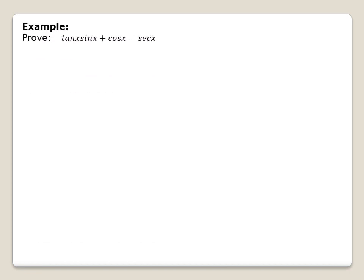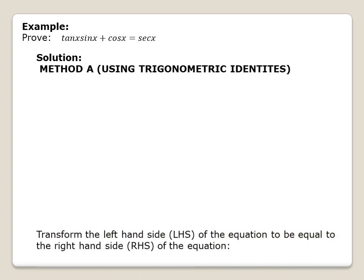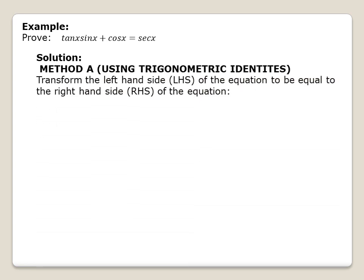Let us now have one example: to prove that tan x · sin x + cos x = sec x. In this example, we have two methods. Let us start first with Method A — that is, by using trigonometric identities.